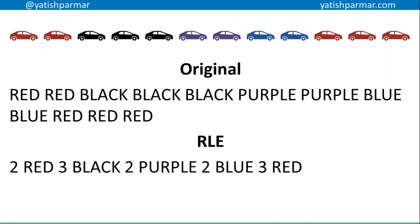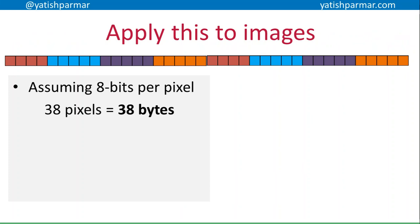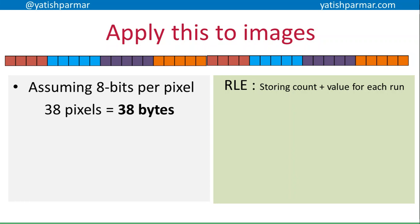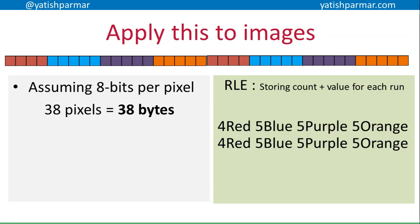To visualize that, the original versus the run length encoded version — we're storing the count and the data item, where one run is one set of repetitions of a particular data item. Applying that to images: assuming eight bits per pixel, if that's one line of an image with 38 pixels, that's 38 bytes. Using run length encoding on that same image, you'd do something like four red, five blue, five purple, five orange, and so on.